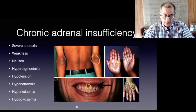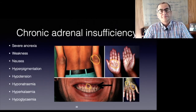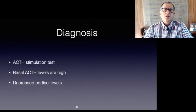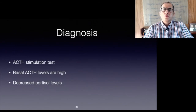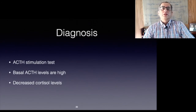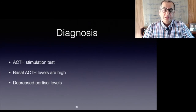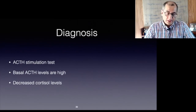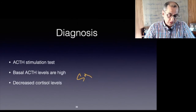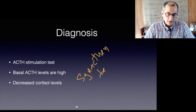Hyperpigmentation is seen on the extensor surfaces, skin creases in the hands, and plaques on the gums. Some patients have vitiligo alongside hyperpigmentation. The diagnosis of adrenal insufficiency is made using the ACTH stimulation test — basal ACTH levels are found to be high with cortisol levels decreased, and there is no rise in cortisol following exogenous administration of ACTH, also known as the Synacthen test.